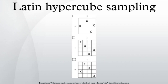In Latin hypercube sampling one must first decide how many sample points to use and for each sample point remember in which row and column the sample point was taken. In orthogonal sampling,